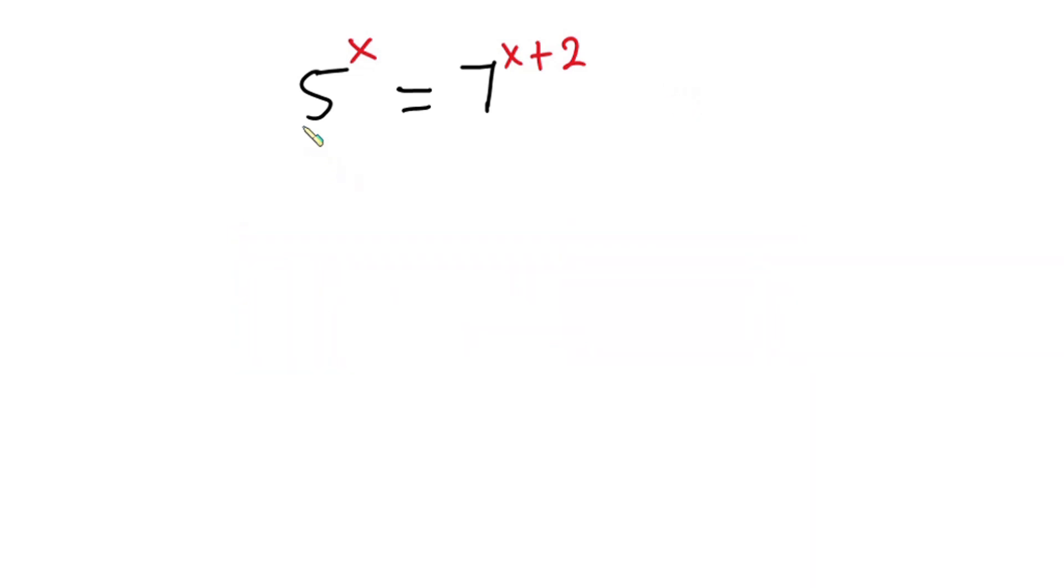Now let's get started. I can rewrite this equation as 5 to the power x equals 7 to the power x times 7 to the power 2.